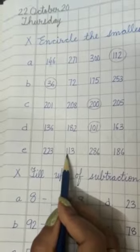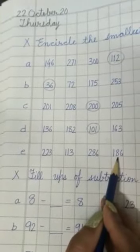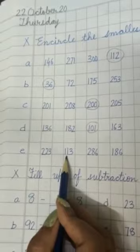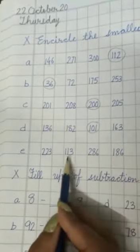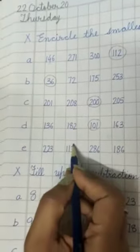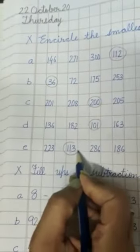Let's check the second digit: 1 and 8. 1 is smallest. So 113 is the smallest number.